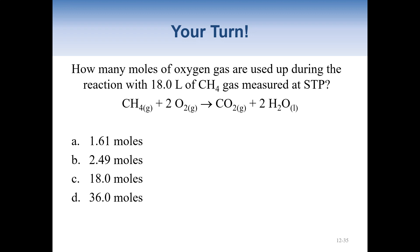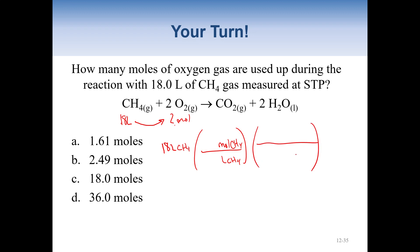How many moles of oxygen gas are used up during the reaction with 18 liters of CH4? We're going from liters of CH4 to moles of O2. Starting with 18 liters of CH4, we get to moles of CH4 using the 22.4 liters per mole conversion. From moles of CH4 we go to moles of O2 using the mole ratio — there's a 1 in front of CH4 and a 2 in front of O2. Multiply across the top and divide the bottom: we end up with 1.61 moles of O2.